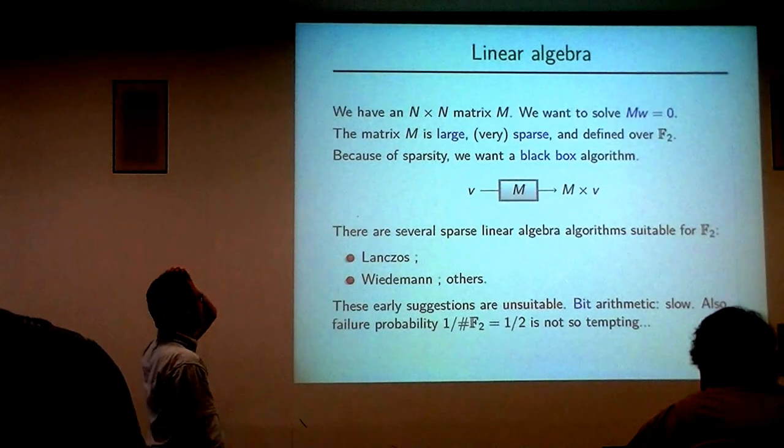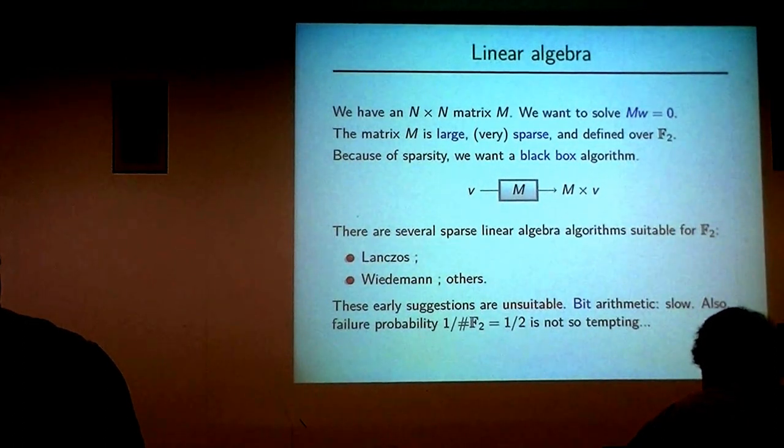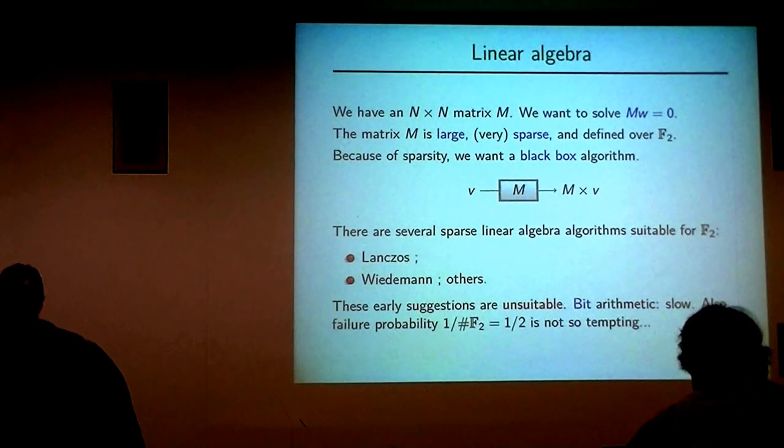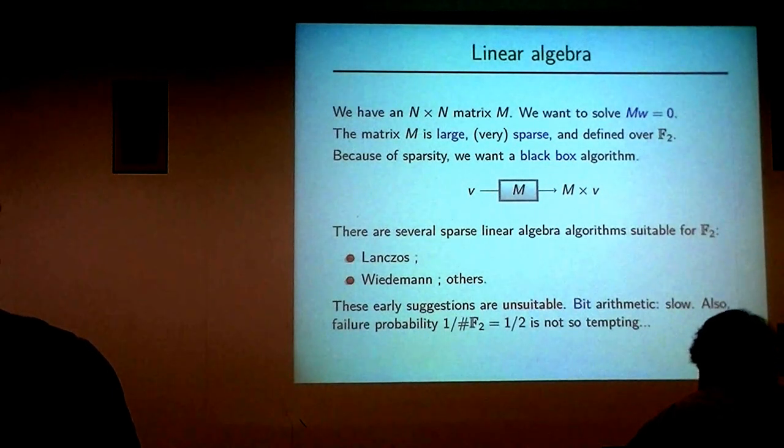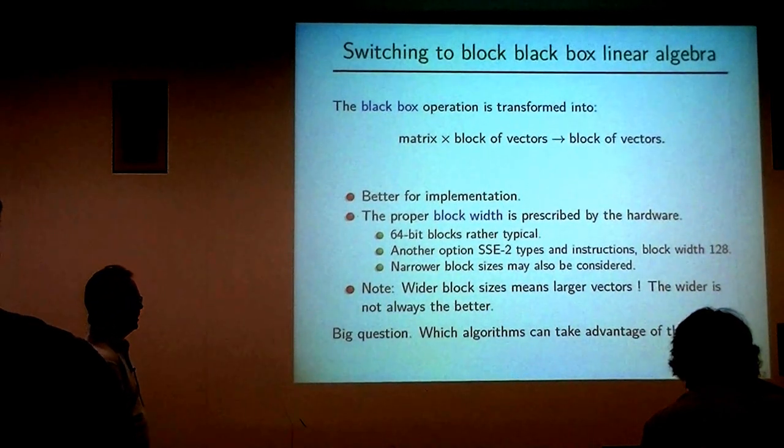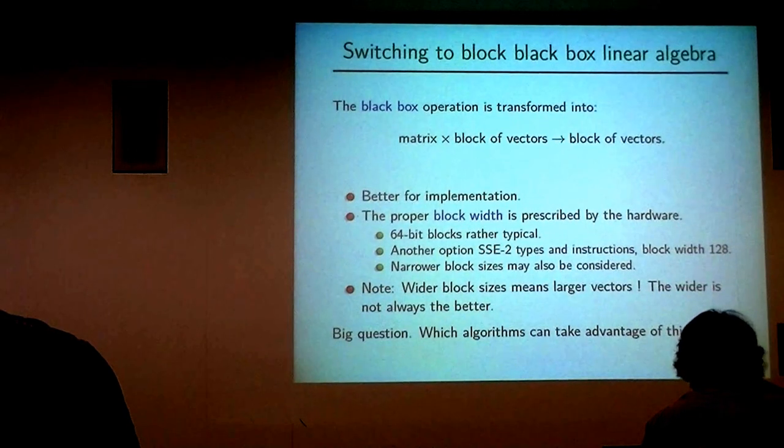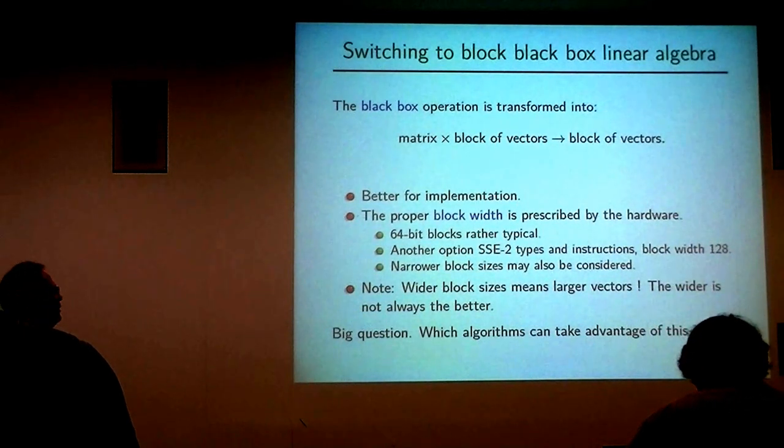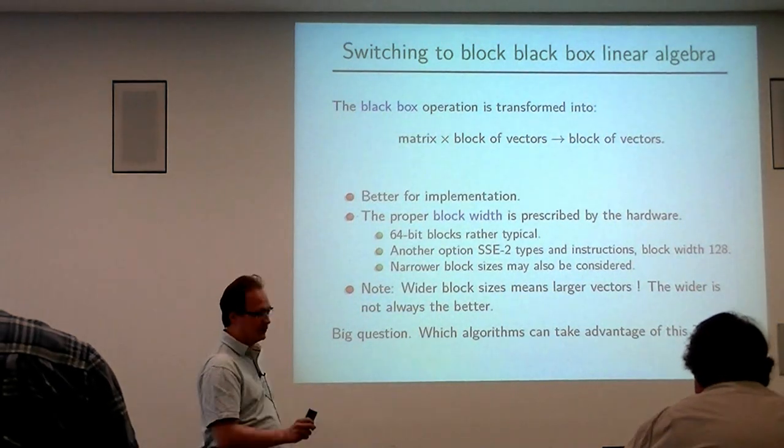Given the size of the matrix, anything which touches the matrix is basically forbidden. So you have to use a black box algorithm. This is the only way you are allowed to access your matrix. It means you have to focus on adapted algorithms, which are the simplest ones, the Lanczos and Wiedermann algorithms. Unfortunately, these are completely unsuitable to computations over F2, because there is a failure probability which is one over the size of the field, so it's extremely tempting for F2.